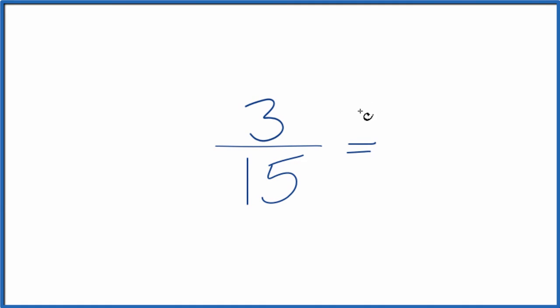Let's write three equivalent fractions for 3 fifteenths. And here's how we do it. We're looking for another fraction that has the same value, the same decimal value if we divide 3 by 15, just we have a different numerator and denominator.